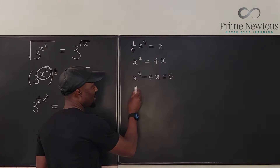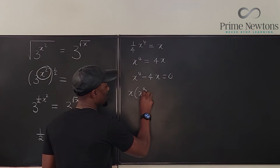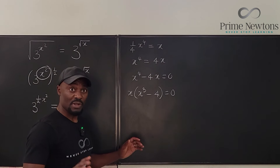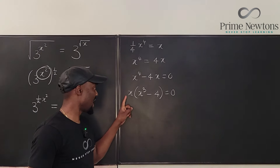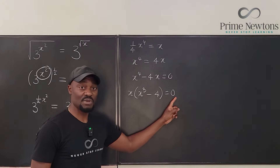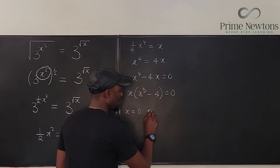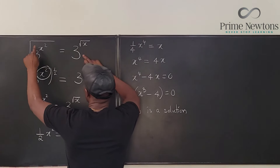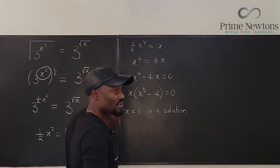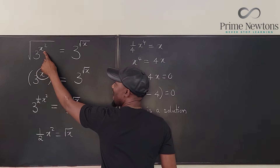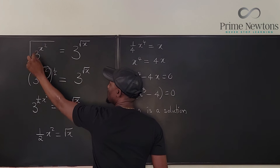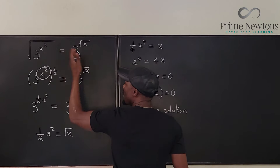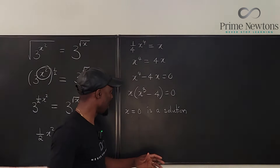Let's factor out x — we have a common factor — giving x(x³ - 4) = 0. By the zero product property, x = 0 or x³ - 4 = 0. x = 0 is a solution as long as it works in the original problem. Can you plug zero under a square root? Yes. So we get square root of 0² = 3^0, which is 1 = 1. We approve this one.